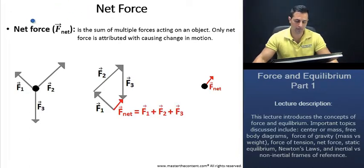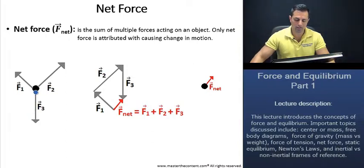Now we'll take a look at net force. Net force is the sum of multiple forces acting on an object. Only net force is attributed with causing change in motion. If we take a look here at our first diagram, we see that we have an object here. This is a free body diagram, which we'll cover in just a moment. We have three different forces acting on this object in three different directions. The vector sum of all these forces - force one, force two, and force three - is actually going to be force net. Thus, that is why we can write force net as such, because only net force is attributed with causing change in motion. And that's exactly what we see here. We'll be doing multiple examples of this in just a moment.